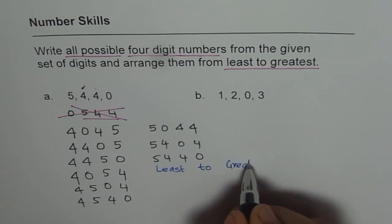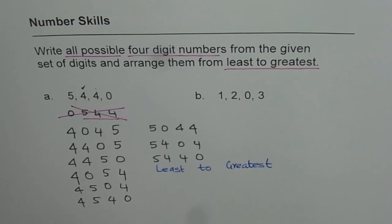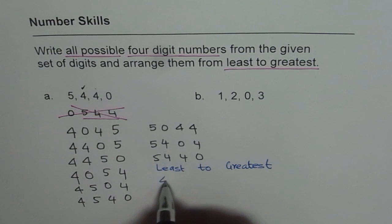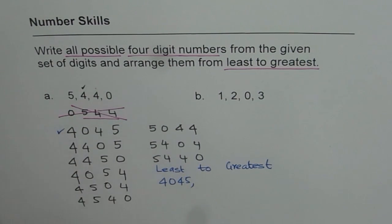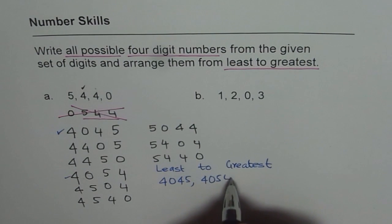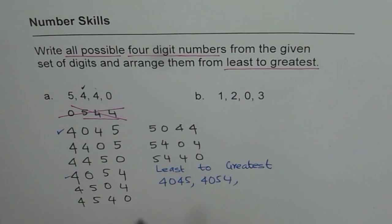Is that okay? Okay. So which one is the least? Let's start with this, right? Four, zero, four, five is the least. So we get four, zero, four, five. And then, let's say this one, then this one, four, zero, five, four. And then, then I think we have placed them in order.